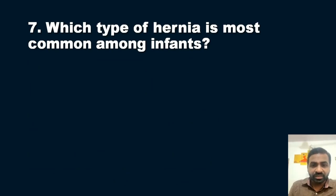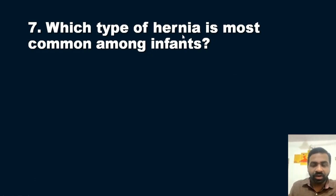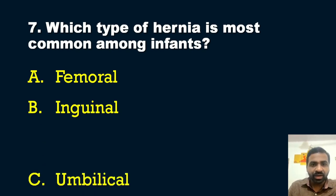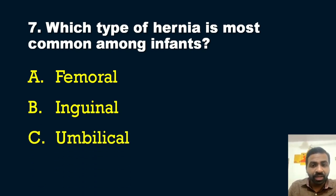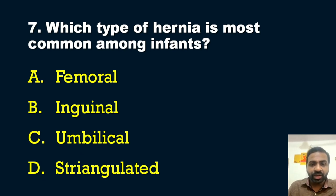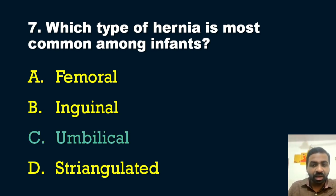The seventh question: which type of hernia is most common among infants? Options: A — femoral hernia, B — inguinal hernia, C — umbilical hernia, D — strangulated hernia. The answer is option C — umbilical hernia is most common among infants.